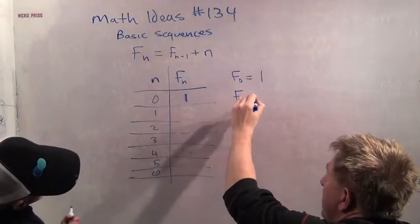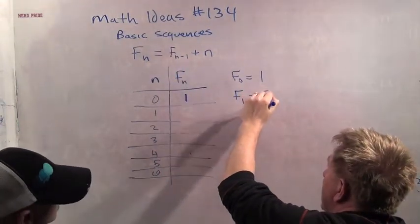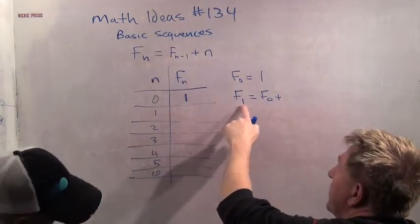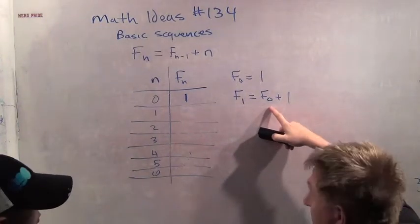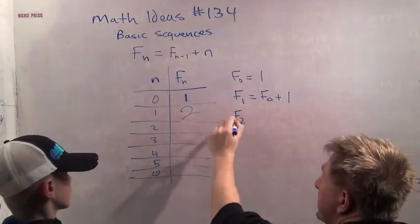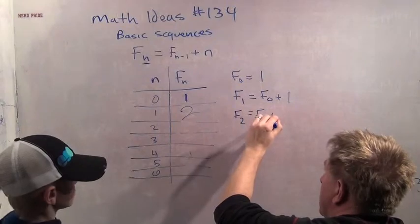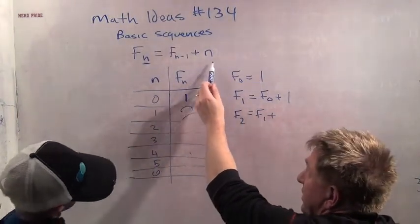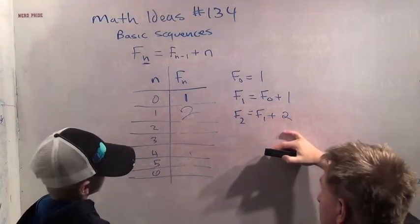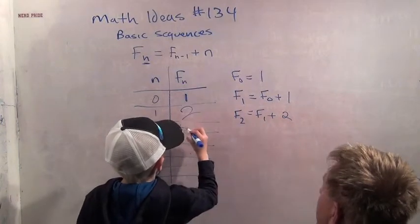And the formula for F1 is F1, when n equals 1, equals F0 plus n. What is n? We're doing n equals 1, right? The number equals 1. So F1 equals F0 plus 1. What is F0? F0 is 1. So what's 1 plus 1? 2. Good. Now I'll show you the next one. F2, so in this case n equals 2, equals F1 plus n. And n equals 2 in this case, right? So F2 equals F1 plus 2. And what is F1 plus 2? F1 is 2. 2 plus 2 is 4.